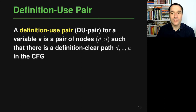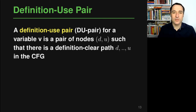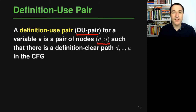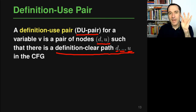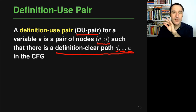After defining def-clear paths, we can define what a definition-use pair is. A definition-use pair, or DU pair, for a variable v is a pair of nodes d and u such that there is a definition-clear path starting at d and ending at u in the control flow graph. Basically, at node d we define a value, and at node u that value is then used.